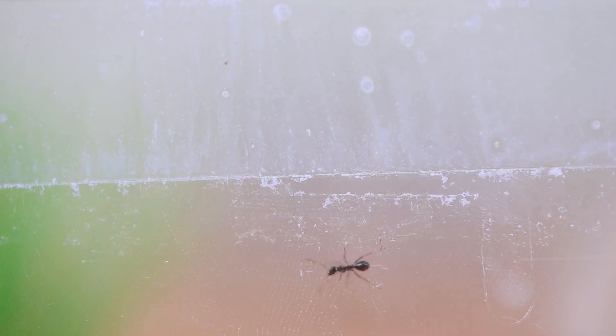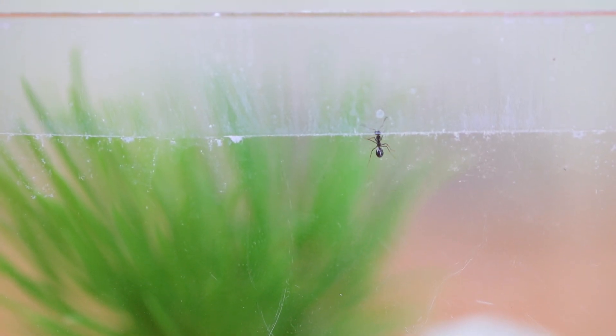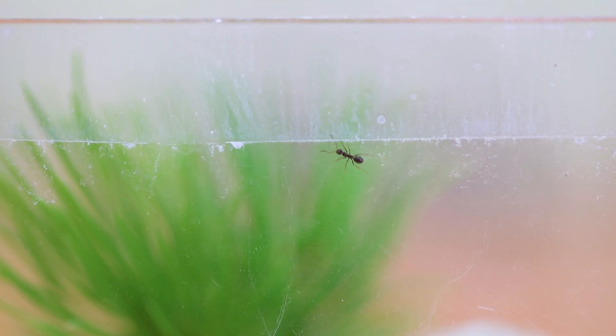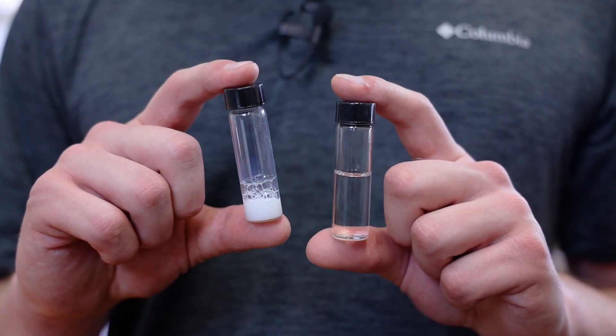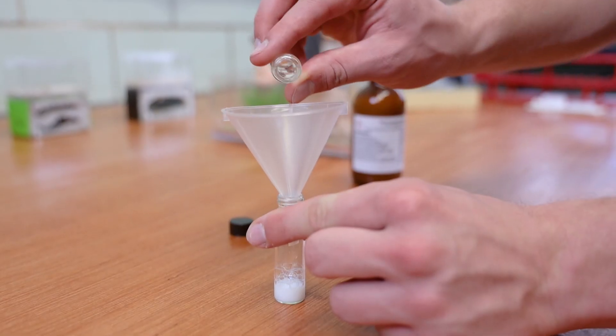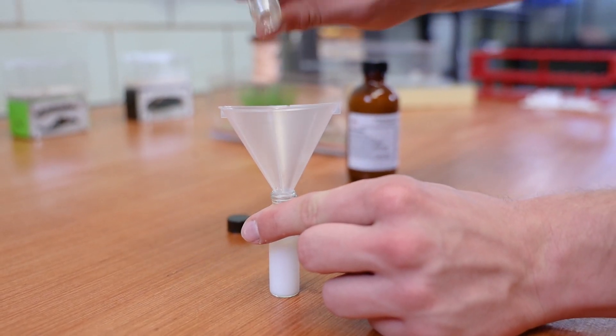Teflon is a particularly smooth surface, and ants generally cannot grip Fluon, making it an ideal escape prevention tool. I prefer to use diluted Fluon. I combine one part Fluon with three parts distilled water. This seems to be just as effective, but it uses less Fluon and it dries clearer.